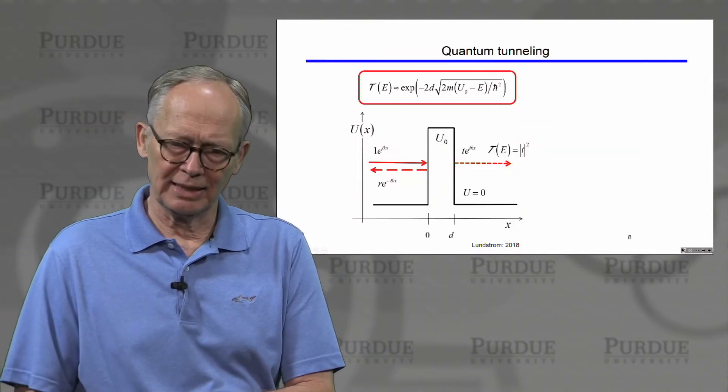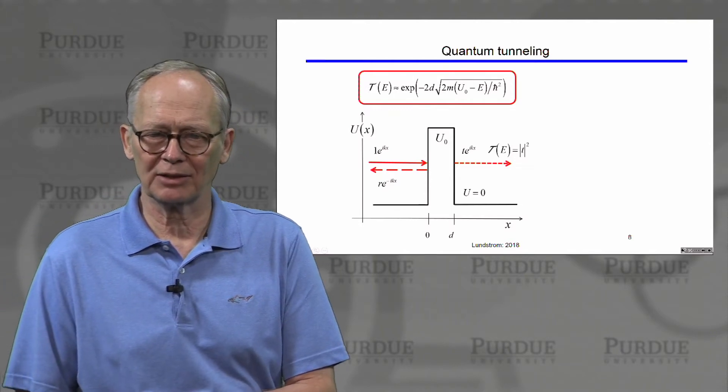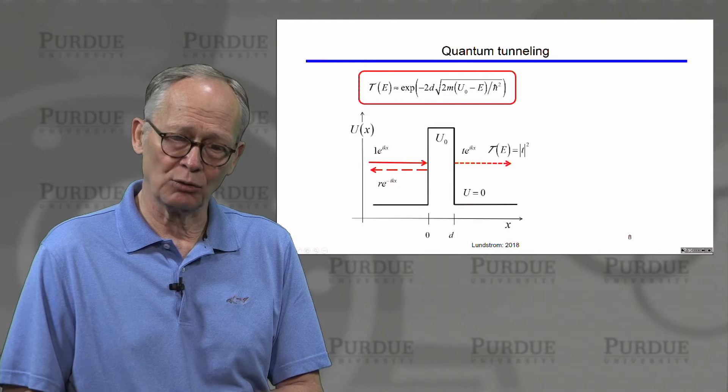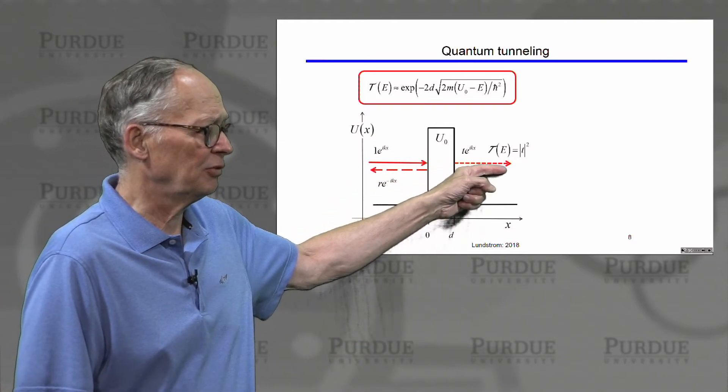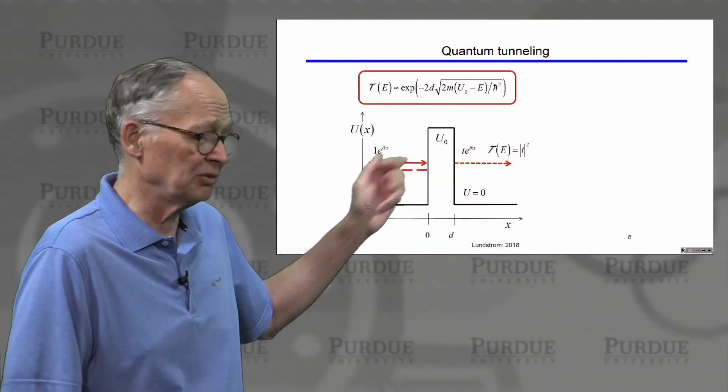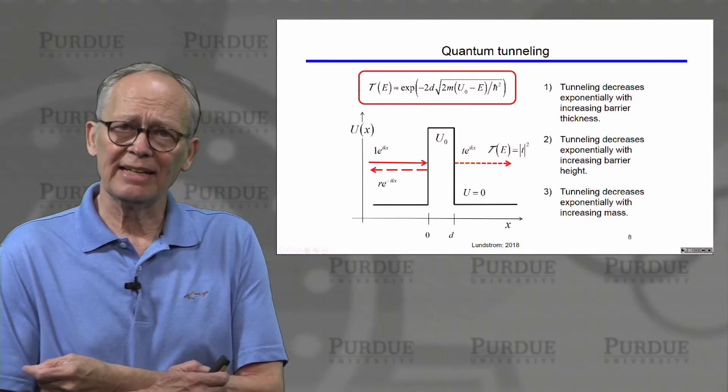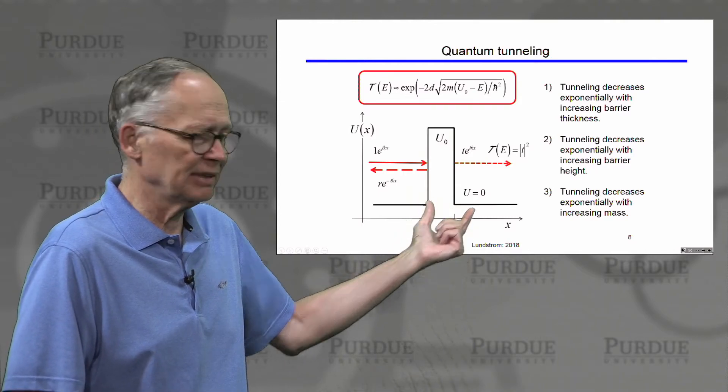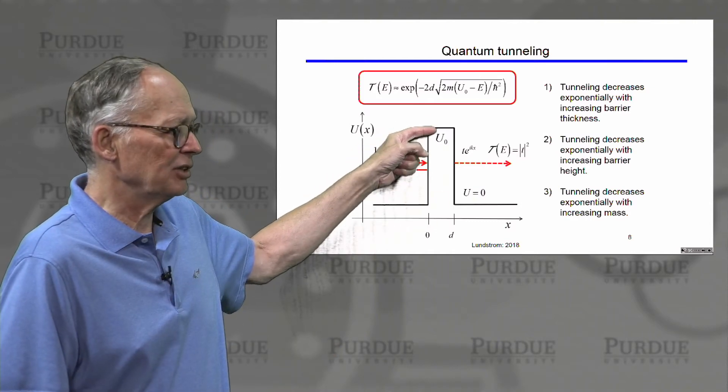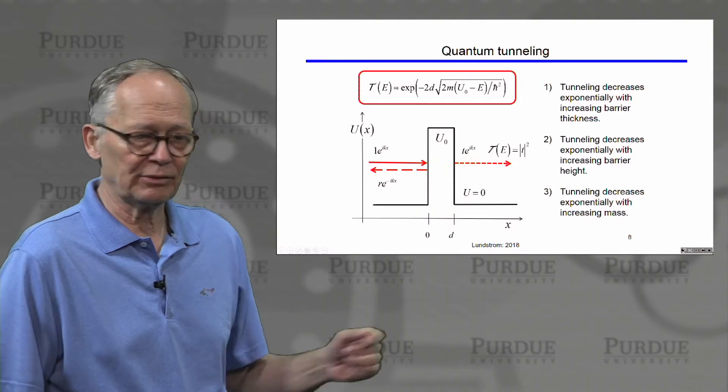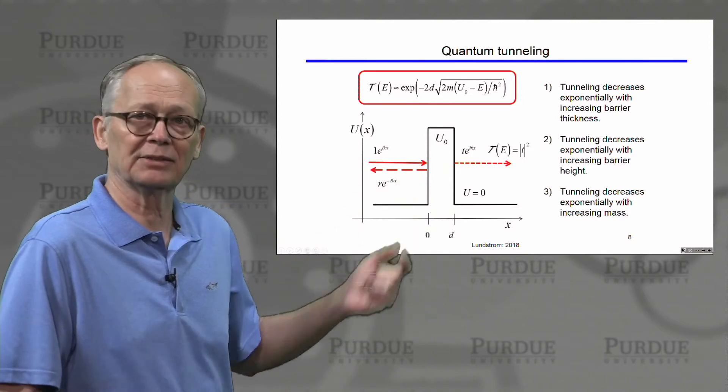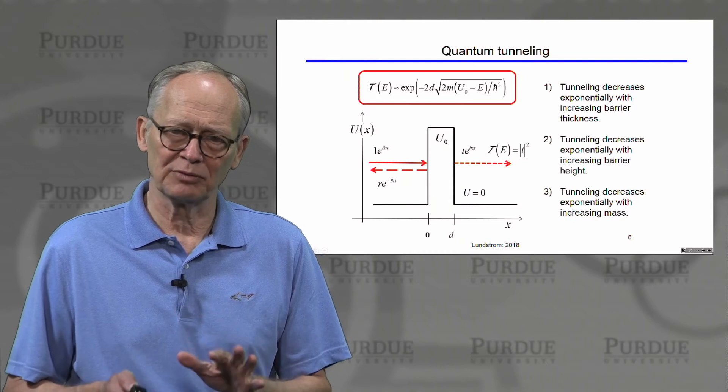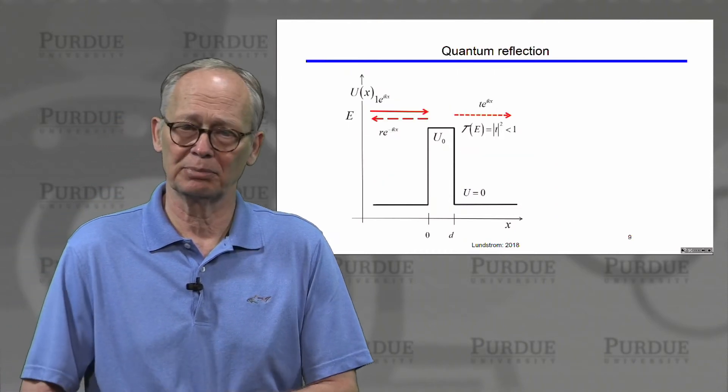All right, another phenomenon that can become important in semiconductor devices is quantum mechanical tunneling. And this is the phenomenon where if an electron is incident on a barrier and it doesn't have enough energy to get over the barrier, it can tunnel through and some fraction of it can come out, some fraction of an incident flux can come out the other side. Some key things to remember about quantum mechanical tunneling is that the transmission decreases exponentially as we increase the width of the barrier. It also decreases exponentially as we increase the height of the barrier. And it also decreases exponentially as we increase the mass of the particle that's doing the tunneling. So tunneling is a phenomenon that can become important. Generally, it degrades the performance of devices and we need to understand that it may come into play in various devices.